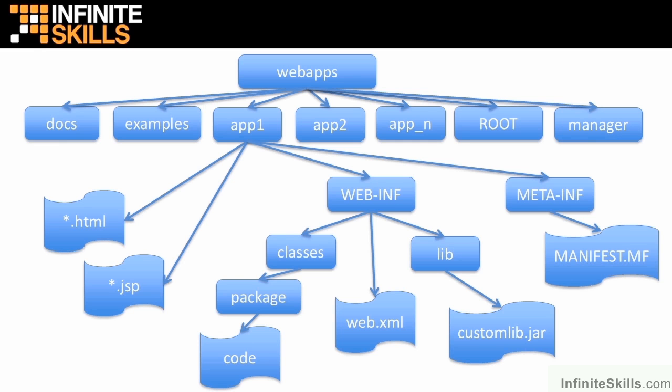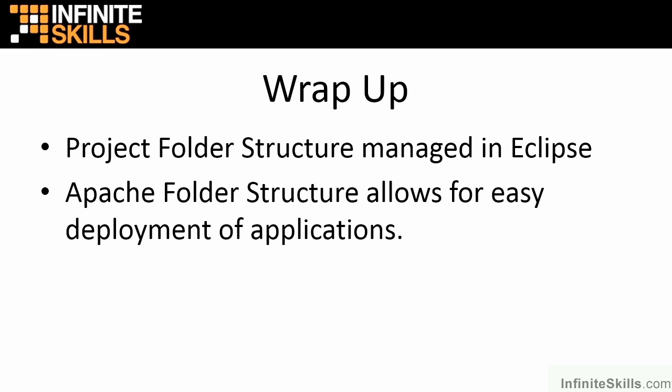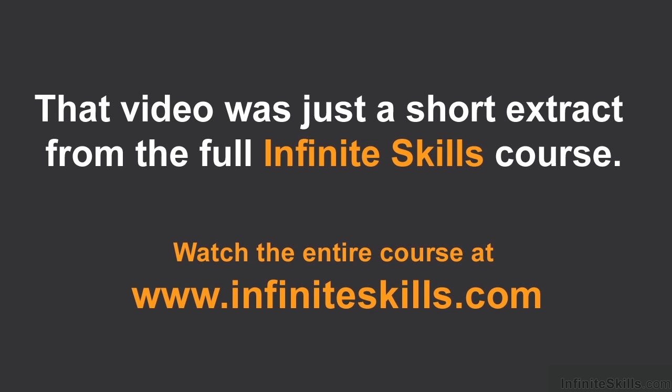So those are the two differences — you can see there are just slight differences as far as the layout goes, but a lot of the structure is the same. It gives us the ability to easily take what we've already built in Eclipse and move that over into the Apache Tomcat server. In conclusion, we saw the project folder structure and how it's managed in Eclipse, and we looked at the Apache folder structure and how it allows for easy manual deployment of applications right out to the web container.